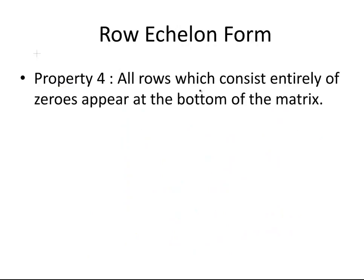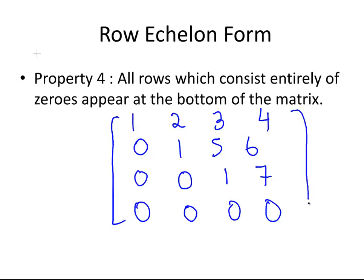Property 4: All rows which consist entirely of zeros appear at the bottom of the matrix. That's straightforward enough. So essentially you might have a matrix like 1, 2, 3, 4, then 0, 1, 5, 6, then 0, 0, 1, 7, and you might get just zeros at the bottom. In that instance, if you have a row of the matrix that is entirely zeros, for it to be in row echelon form it should be at the bottom of the matrix.